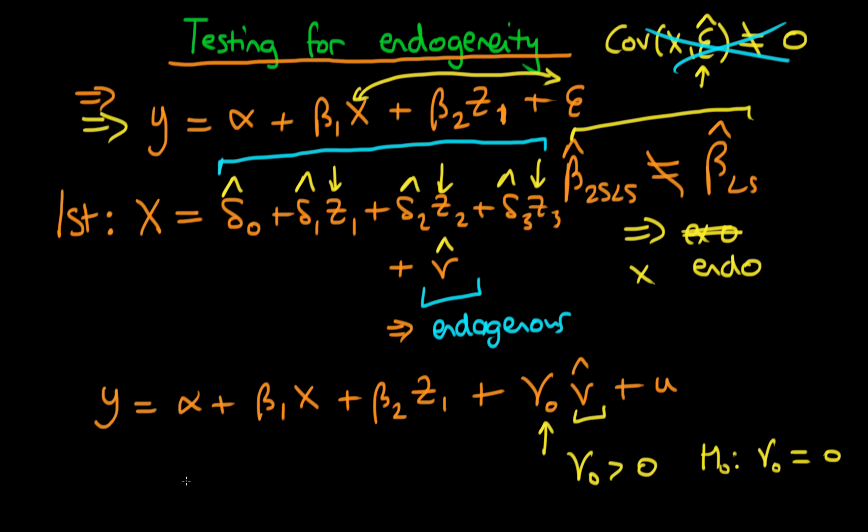Whereas if we conclude under the null hypothesis, we cannot reject the null hypothesis, rather, that gamma 0 equals 0, then we cannot reject the null hypothesis that x is exogenous.